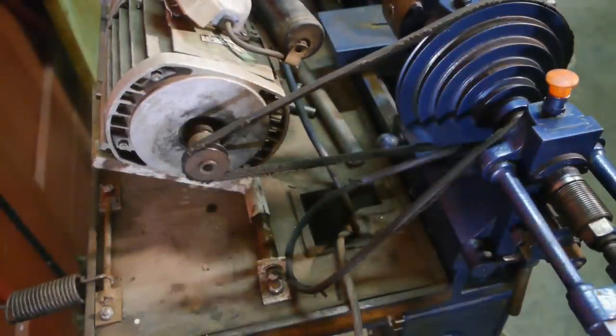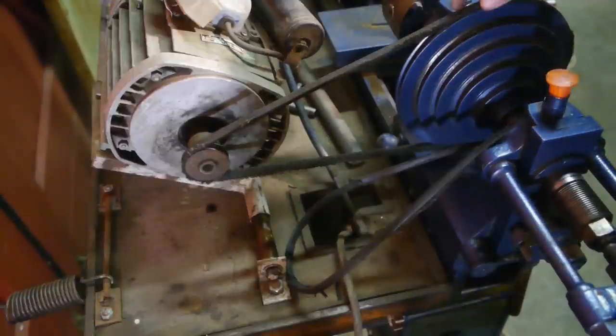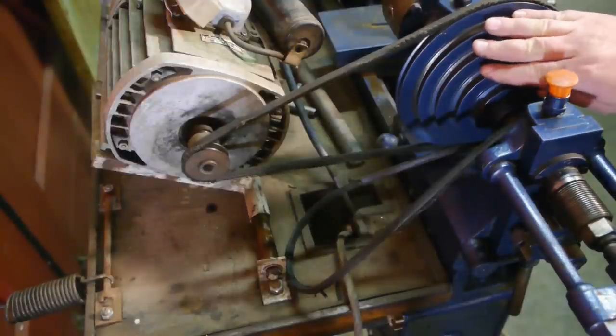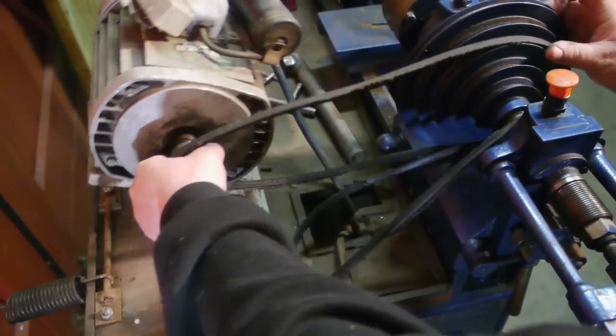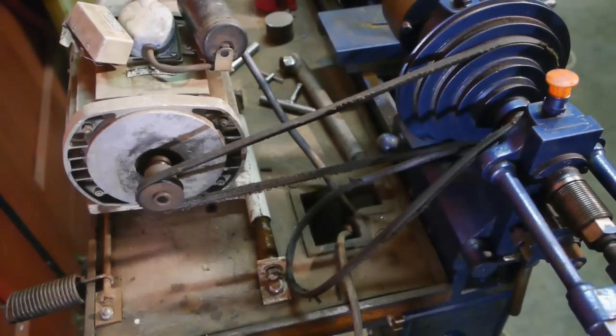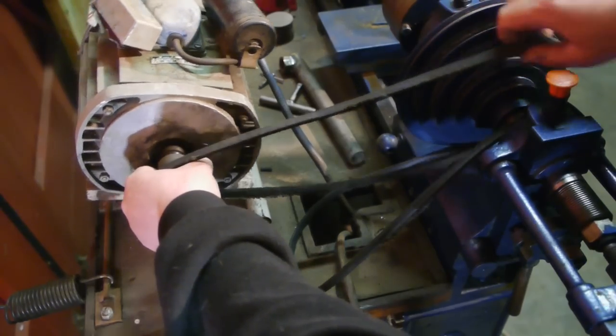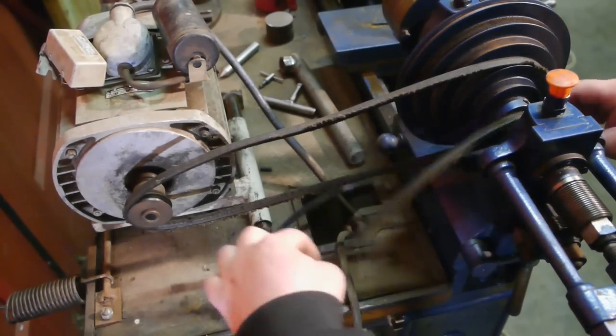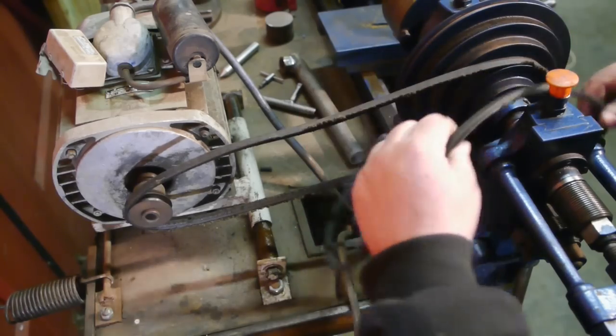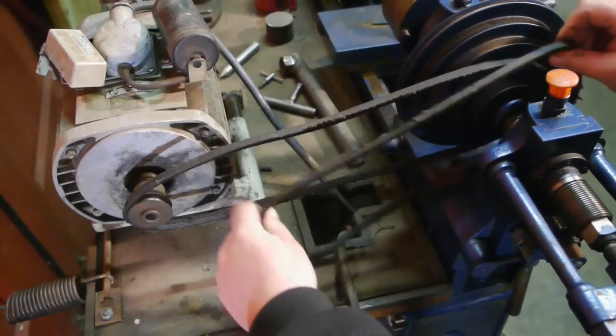When you move to a smaller groove on the spindle pulley, the belt gets too long and there's no way to tighten it anymore. At that point, the idea is to switch to a shorter belt.